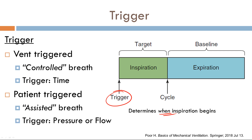Now let's contrast that with an assisted breath. In an assisted breath, the trigger variable is either pressure or flow. The patient triggers a breath themselves, which changes either the pressure or the flow in the circuitry, and that triggers the breath. It is up to you, the operator, to decide whether the trigger variable is pressure or flow. Conventionally, the majority of the time the trigger variable is flow.